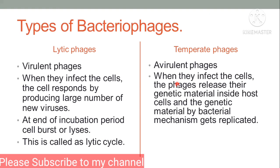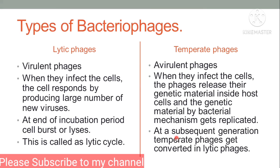Temperate bacteriophages also infect bacteria and release their nucleic acid inside the bacterial cell. That nucleic acid becomes part of the bacterial cell's DNA and gets replicated by the bacterial cell's own replication mechanism. It is then passed from generation to generation. At some subsequent generation, these temperate bacteriophages can become virulent — that is, lytic — bacteriophages, and they lyse the cell and get released.